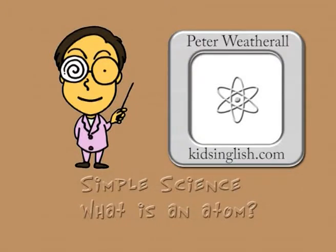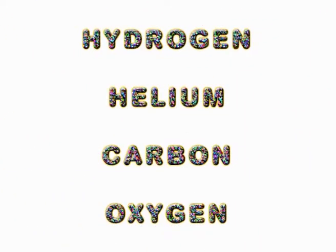Simple science. What is an atom? Chemical elements such as hydrogen, helium, carbon and oxygen are made up of tiny particles called atoms.